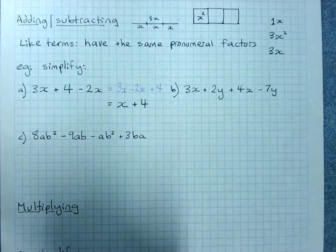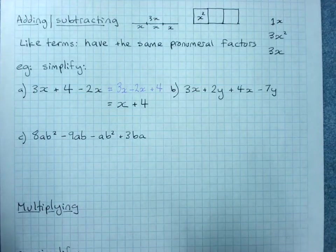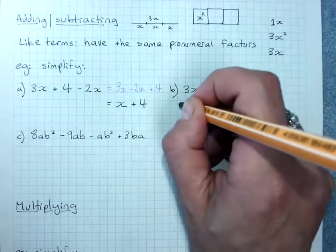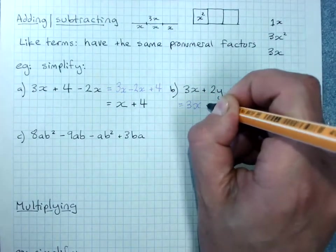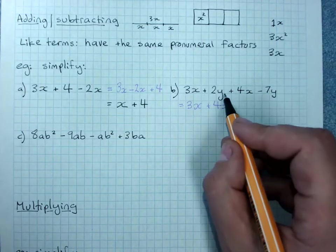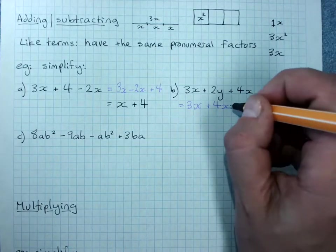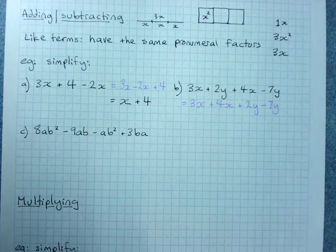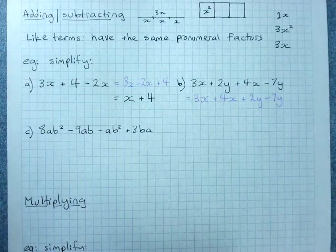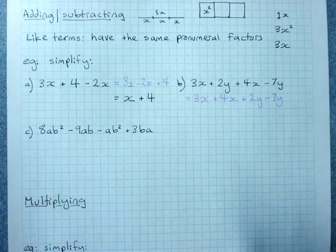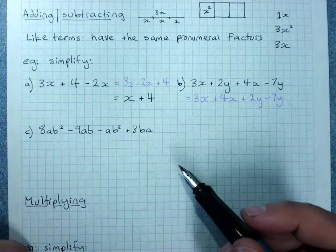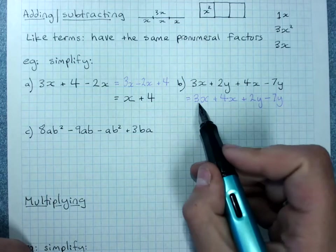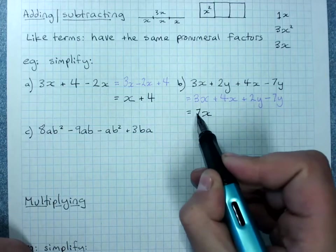So here again you can rearrange keeping your like terms together. 3x plus 4x plus 2y minus 7y. Now these lines that I'm doing in purple aren't really necessary but if you are at all confused about adding and subtracting in algebra then you should do them because they support you to get the right answer.